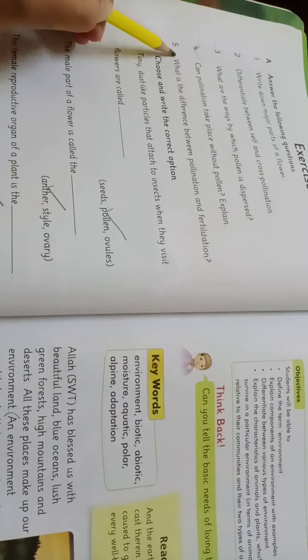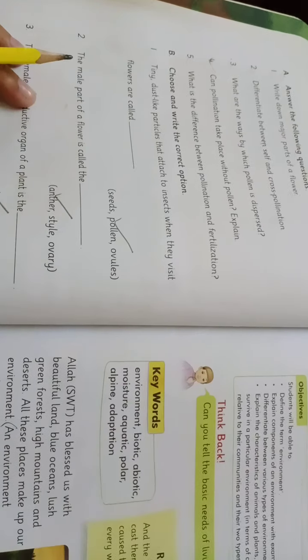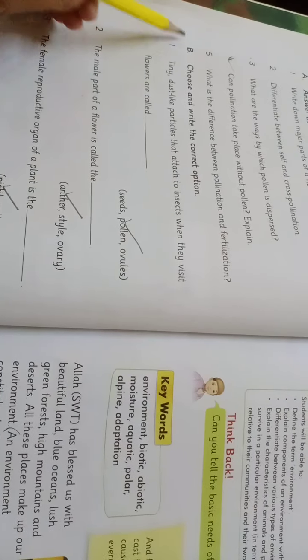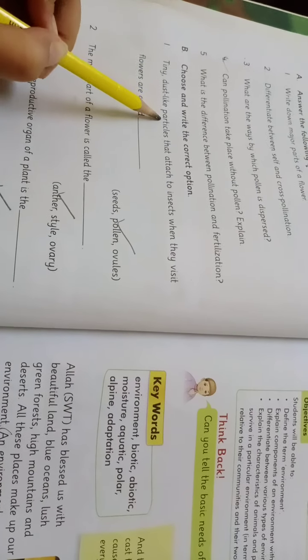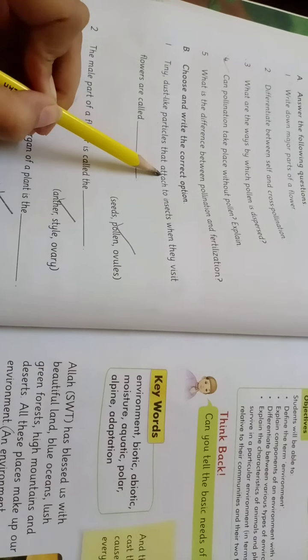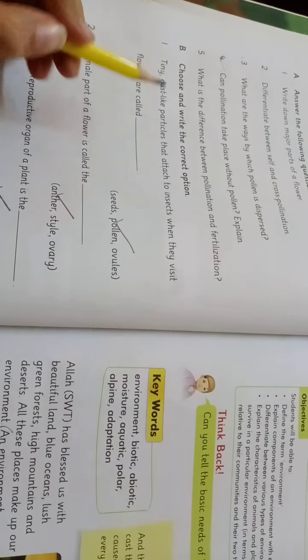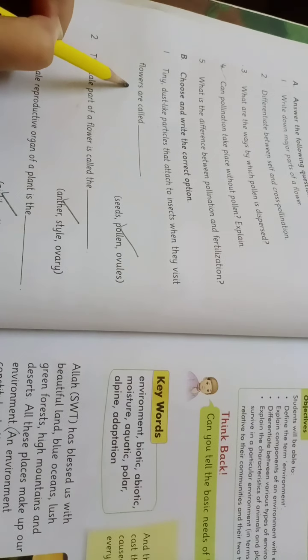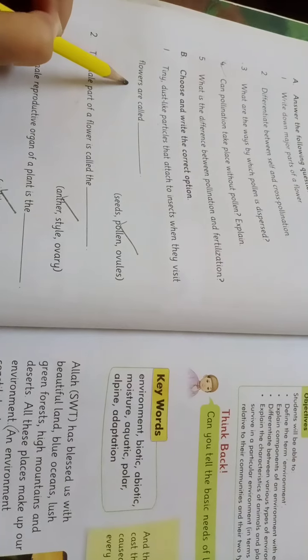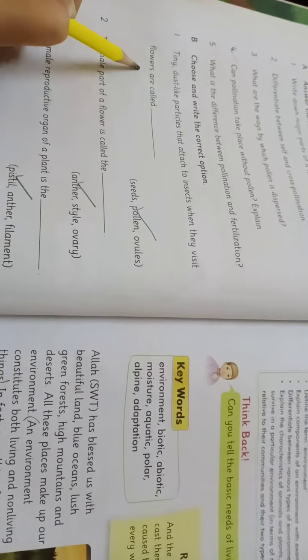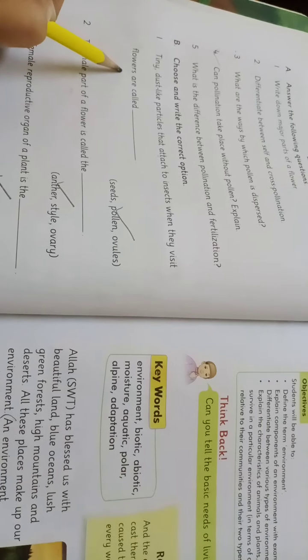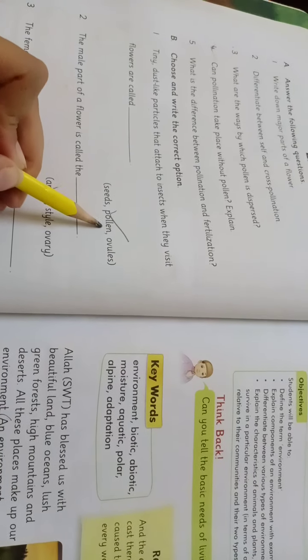Thik hai so in exercise B, number one is: tiny dust-like particles that attach to insects when they visit flowers are called dash. Yaani tiny dust-like particles hote hain thik hai jo attach ho jate hain insects pe. Ye tiny dust-like particles kya hota hai? Pollen hota hai. So the answer is pollen.